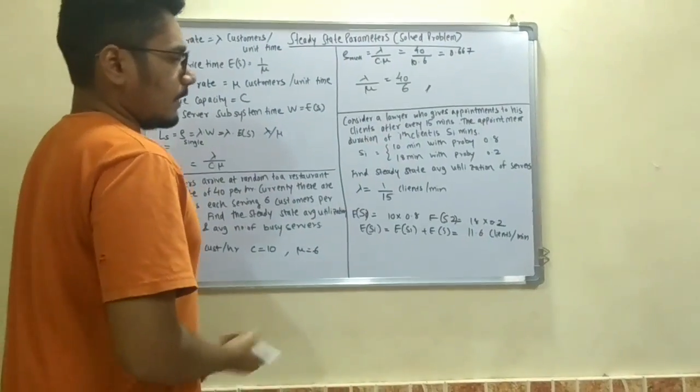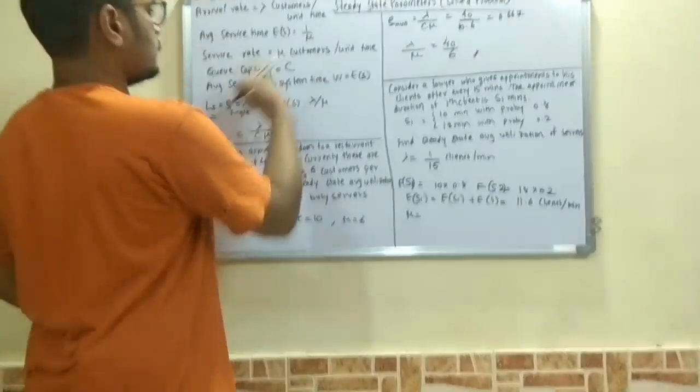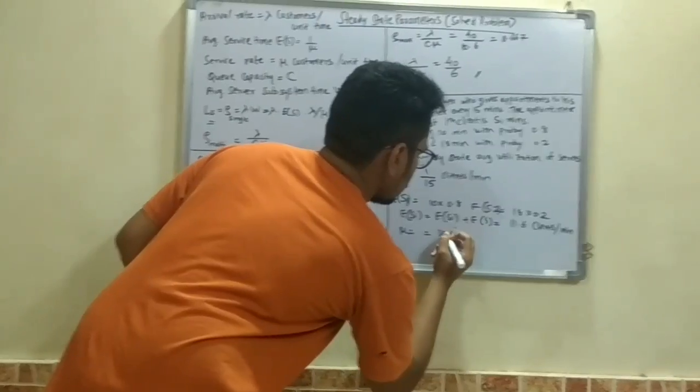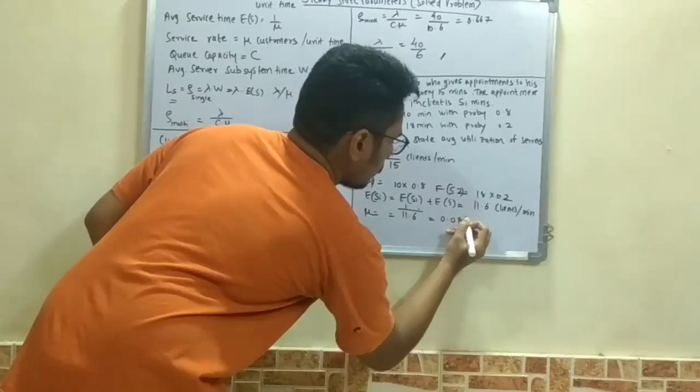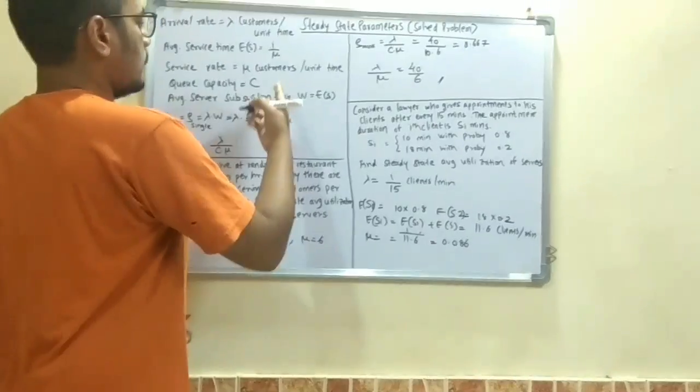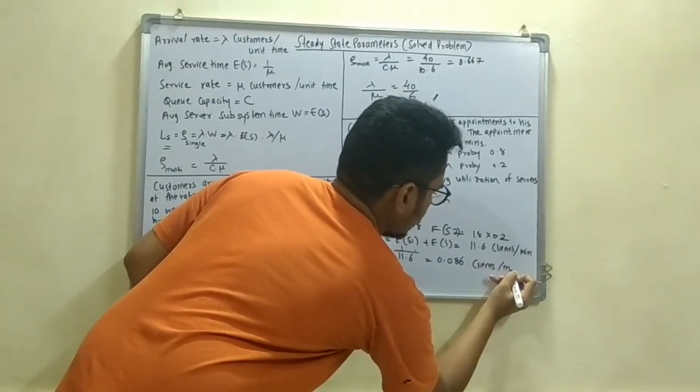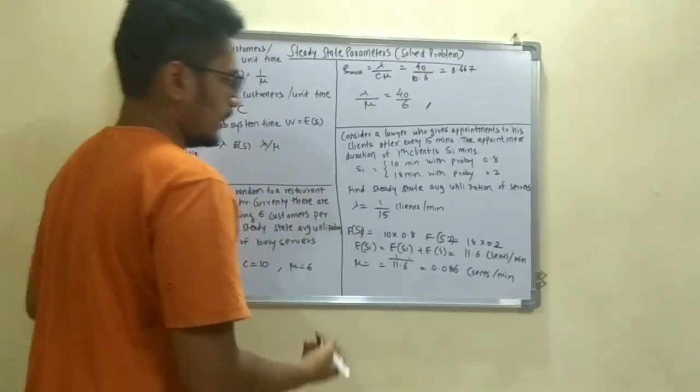Now this is the value. Now you have to calculate the inverse, that is the service rate. Service rate would be inverse of this, that is 1 by 11.6, that would come out to 0.086 value, that is customers per unit time, that is clients per minute. And now you have to calculate the steady state average utilization.